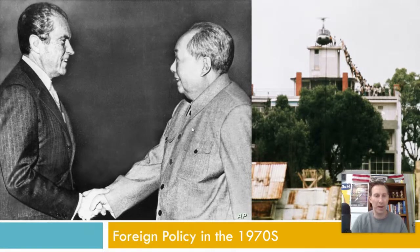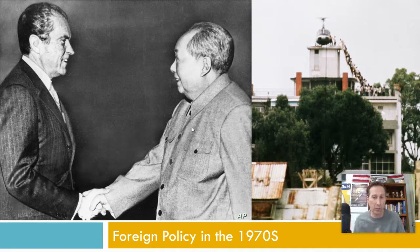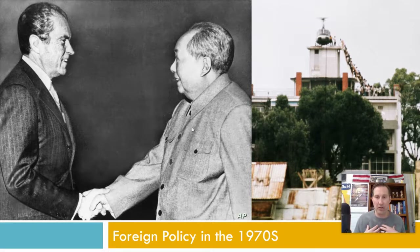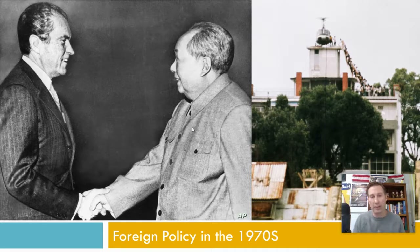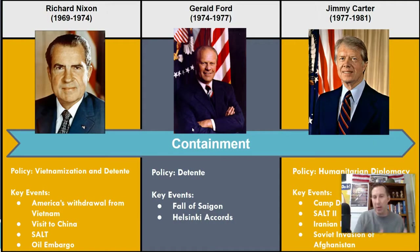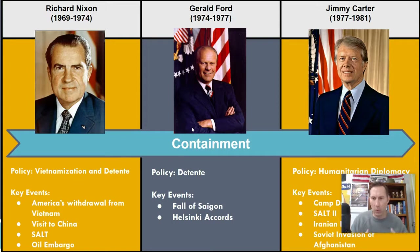Hi guys, it's Mr. Irvin here, and we're going to be talking about foreign policy in the 1970s. A few background things to note: the Cold War is still going on between us and the Soviet Union, and America is still committed to stopping the spread of communism. Going into the 1970s, Vietnam was also continuing. What we're going to see emerging is a series of presidents who will try to put their own spin on the Cold War and the concept of containment, a policy generally accepted by most American presidents.